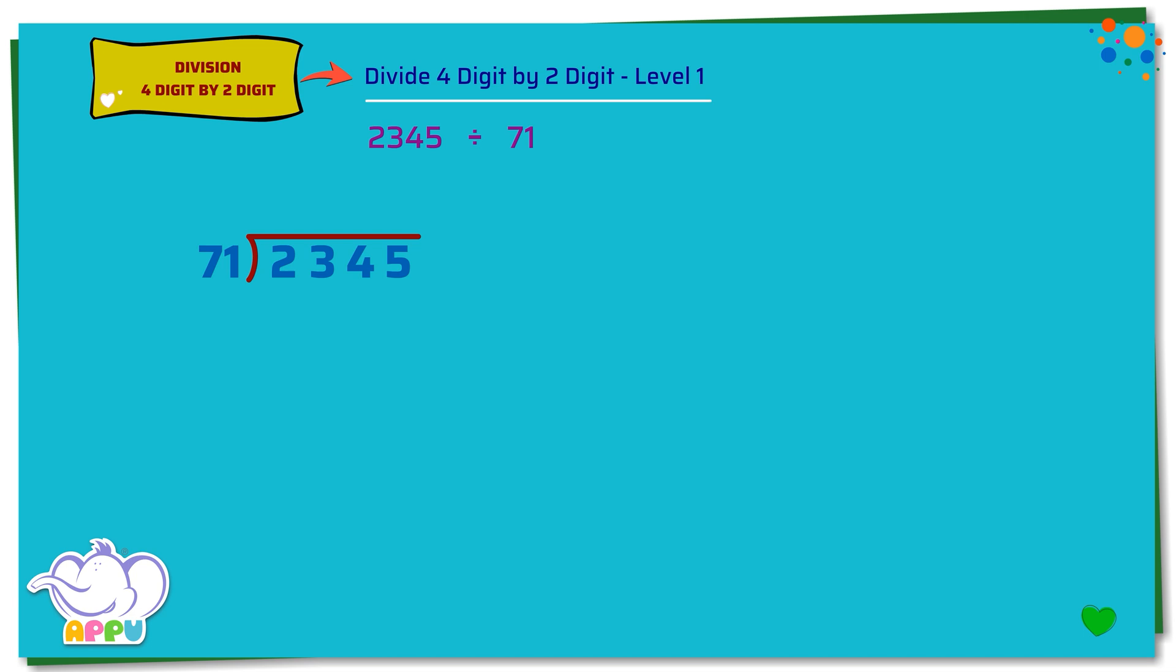Step 1. We cannot divide 2 by 71 since 2 is smaller than 71, so we consider the hundreds digit as well. We cannot divide 23 by 71 since 23 is smaller than 71, so we consider the tens digit as well. We figure out how many 71s does it take to make 234 or almost 234.